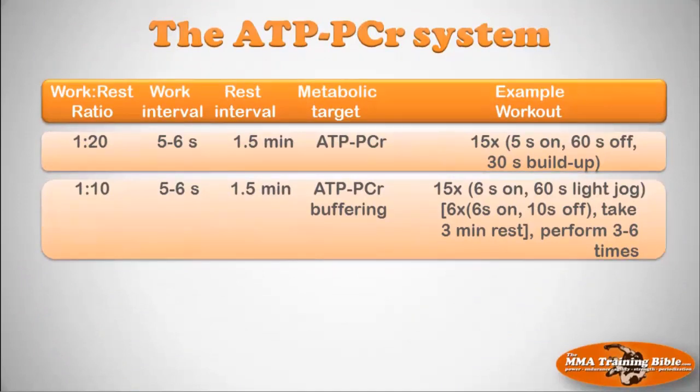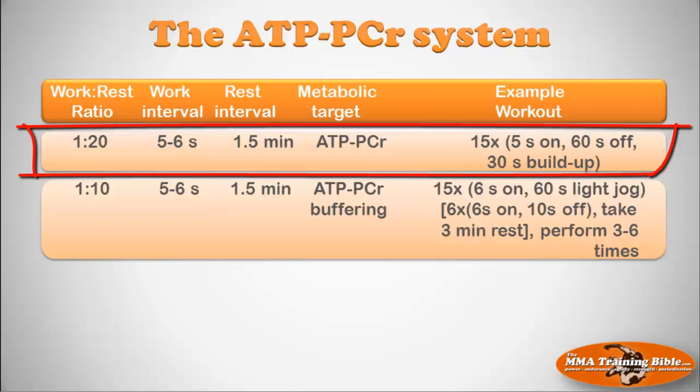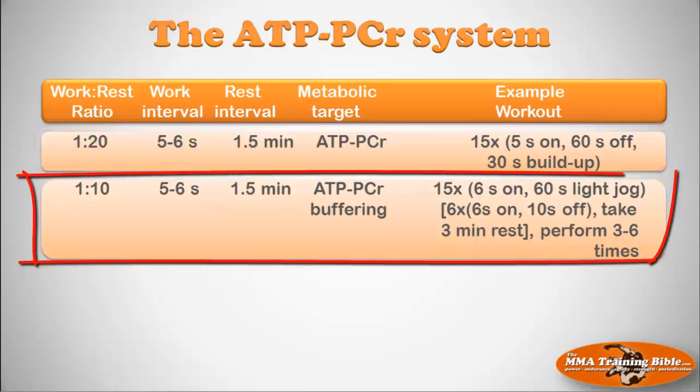To target the ATP-PCR system directly, use work-to-rest ratios of 1:20 — work intervals of five to six seconds, rest intervals of about 90 seconds. Example: 15 times five seconds on, 60 seconds off, with a 30-second build-up. Another protocol — work-to-rest ratio 1:10, five to six second work interval, around 90 seconds rest — focuses on the ATP-PCR system plus metabolite buffering. Example: 15 times six seconds on, 60 seconds of light jogging. A third interesting workout: six times six seconds on, ten seconds off, then a three-minute rest, repeated three to six times.